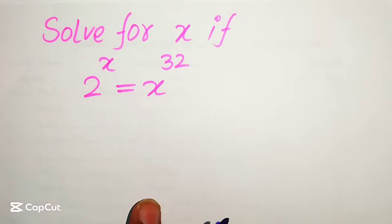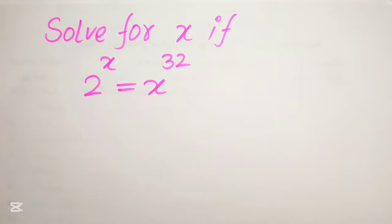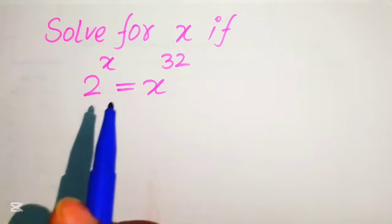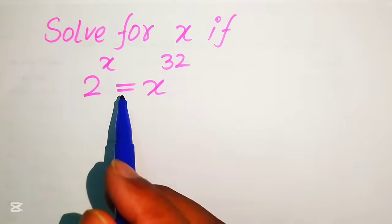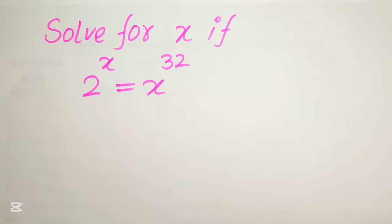Hello everyone, welcome. Here we have 2 to the power of x equals x to the power of 32, and we solve this problem for the values of x.